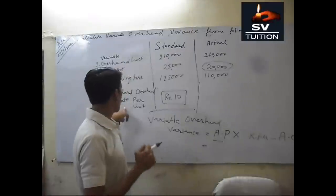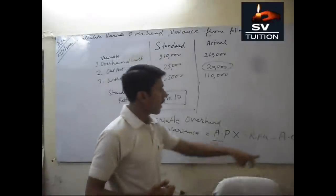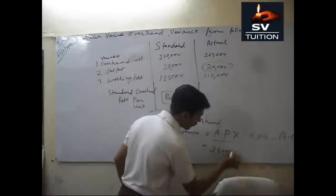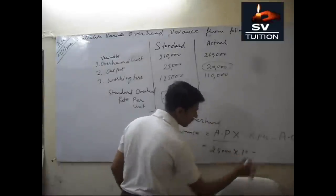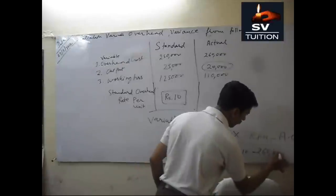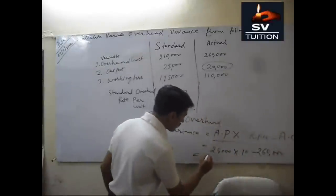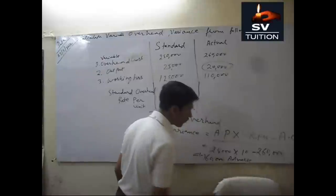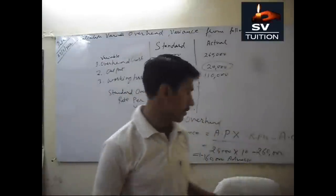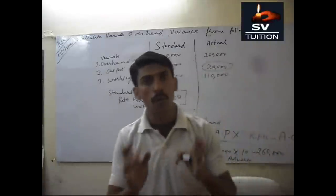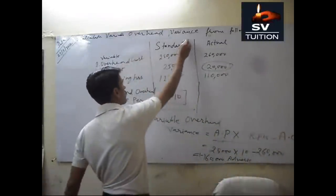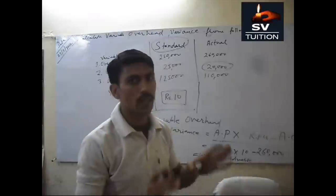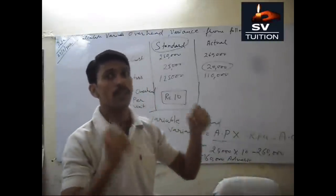That means 20,000 multiplied by 10, minus 260,000. It is 60,000 in minus — this is an adverse, unfavorable variance. It means we have spent more than what we estimated in our standard. For a production of 20,000 units, we spent more than what we estimated.